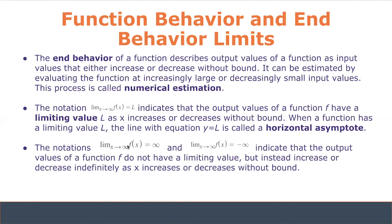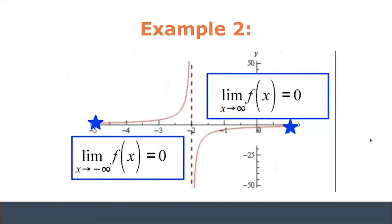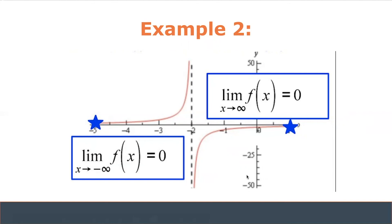The notations where the limit as x approaches infinity of f of x equals infinity or negative infinity indicate that output values do not have a limiting value but instead increase or decrease indefinitely. In the example shown, we can see the range is decreasing with the arc opening upward, making it concave up, and the opposite for the other range. Following the curve as x decreases towards negative infinity, the y values stagnate and approach zero, meaning we've met a horizontal asymptote. This makes our limit equal to zero.